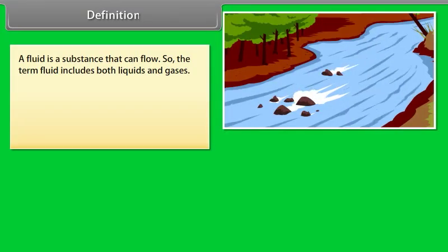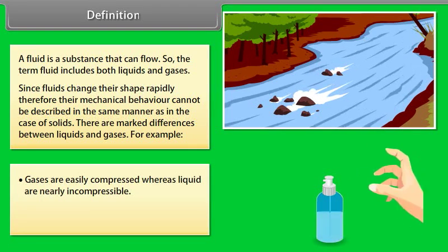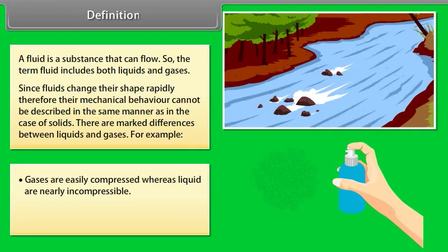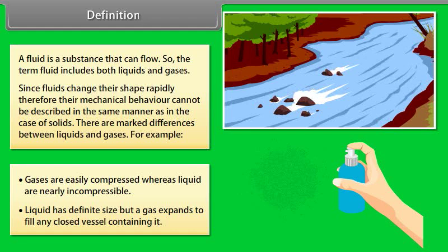Definition. A fluid is a substance that can flow. So the term fluid includes both liquids and gases. Since fluids change their shape rapidly, their mechanical behavior cannot be described in the same manner as solids. There are marked differences between liquids and gases. For example, gases are easily compressed, whereas liquids are nearly incompressible. Liquid has definite size, but a gas expands to fill any closed vessel containing it.